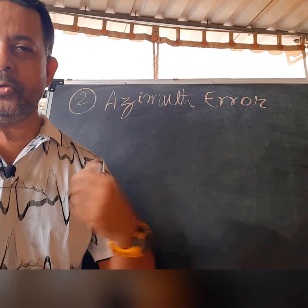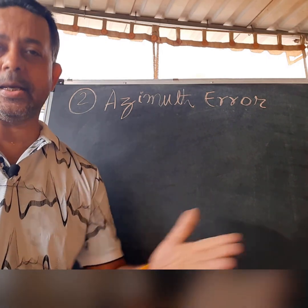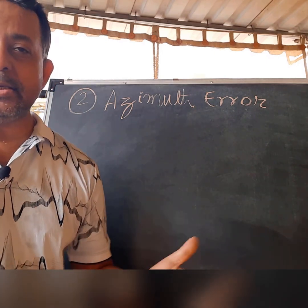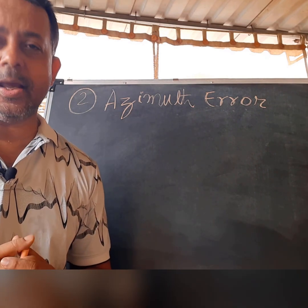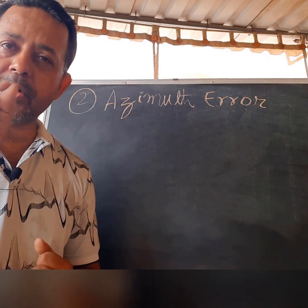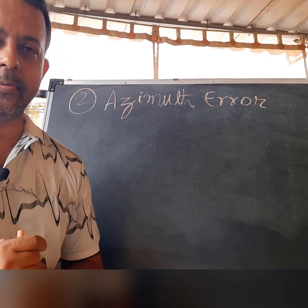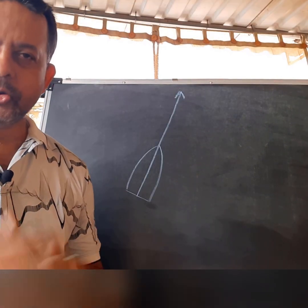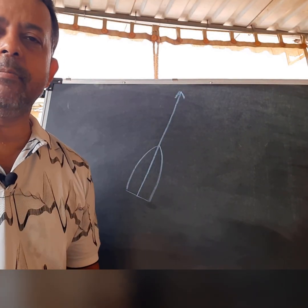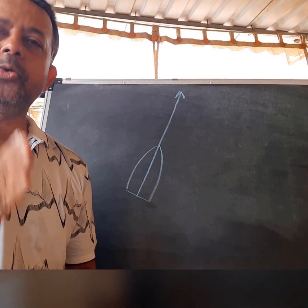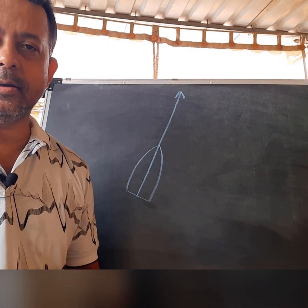Today in this video, we will be discussing how we can easily find the azimuth angle from a reference azimuth and correct our gyro. The most common way surveyors do this in the marine is to take a sun azimuth, or the sun angle.